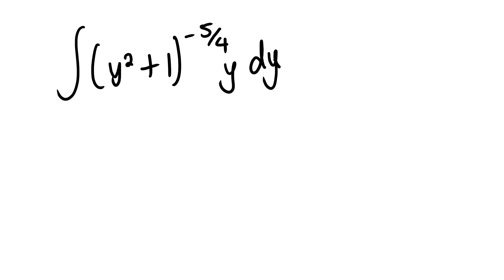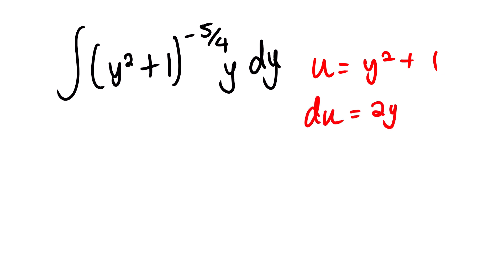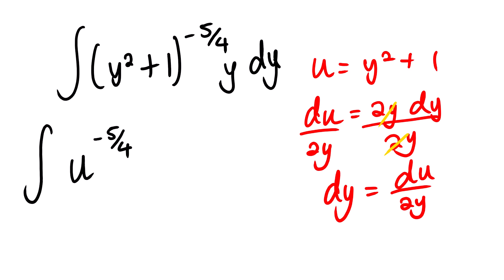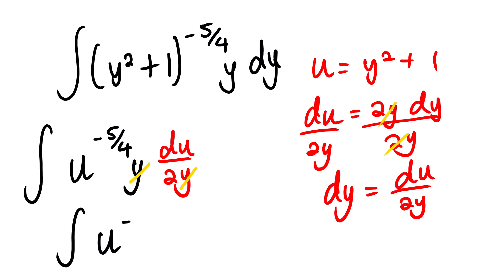In this example we can see that we don't have a choice but to make this expression u. So u equals y squared plus 1, and du equals 2y dy. We divide both sides by 2y, so dy equals du over 2y. We go ahead and substitute: we have u to the power negative 5 over 4, and where we see dy we substitute du over 2y. We can see that y cancels y, and we are left with u to the power 5 over 4 du over 2.